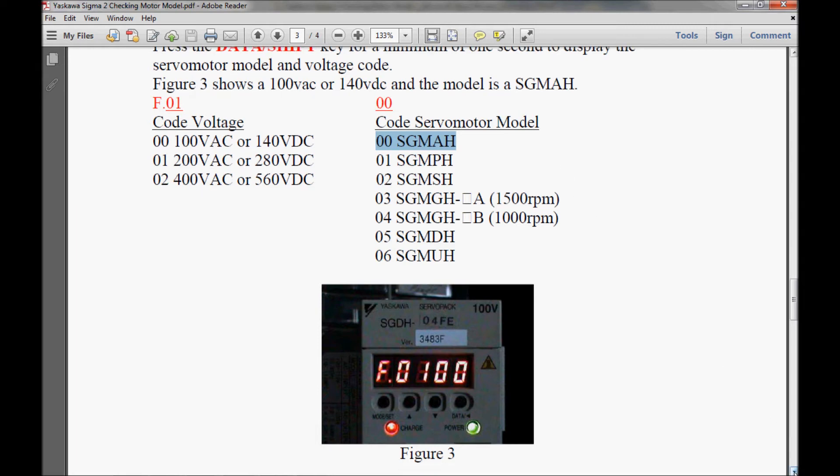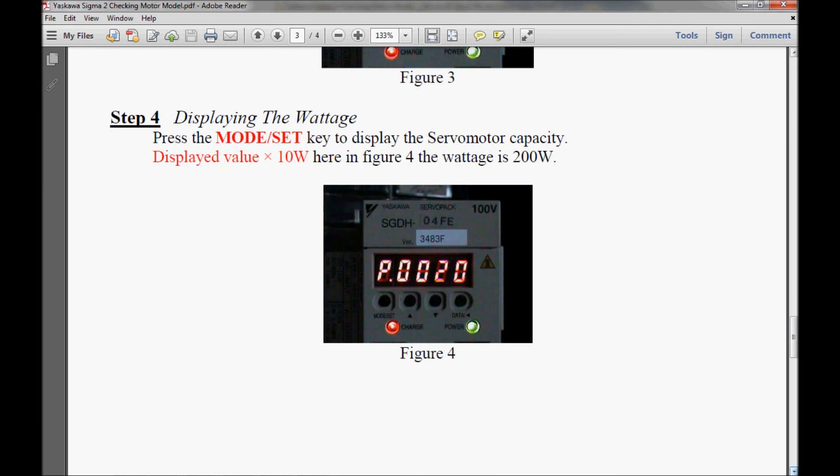I'm going to continue scrolling down here into step 4. In step 4, I am displaying the wattage of the motor. I have to do a little math here. I have to multiply the value that I have here in the display, which is 0, 0, 2, 0. So that's 20 times 10 watts which will give me a 200 watt motor.